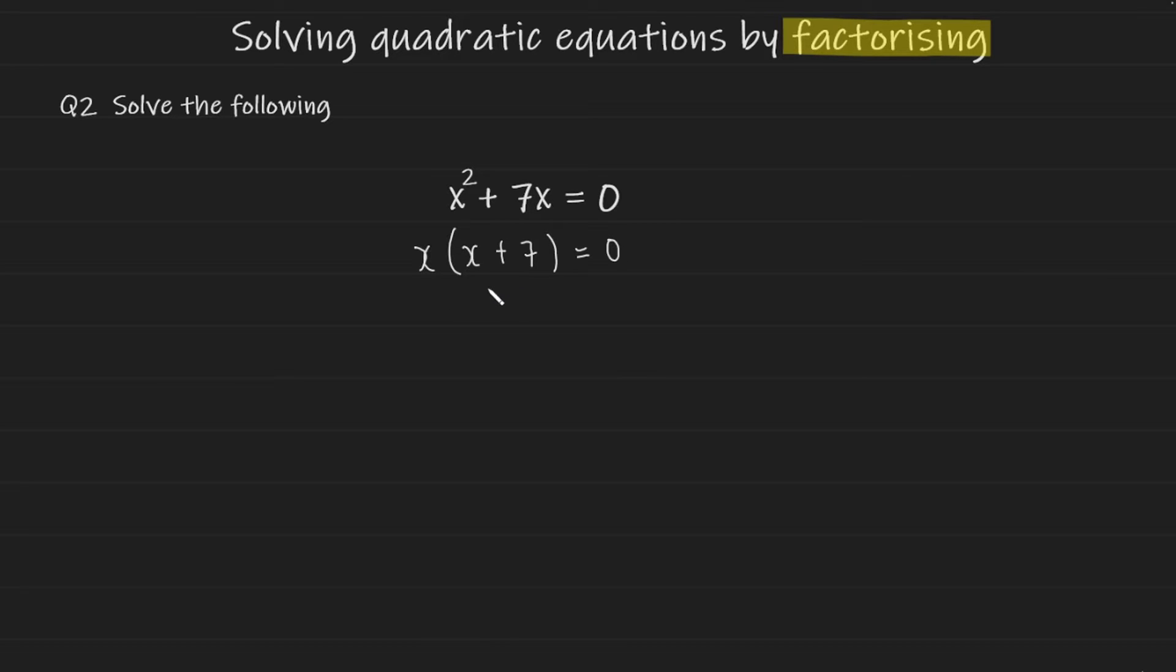Now similar to the previous example, since we don't have two brackets here we have a term and a bracket. Nonetheless we're going to take the term in this case x on the outside and equal that to 0, and that's one of your solutions.